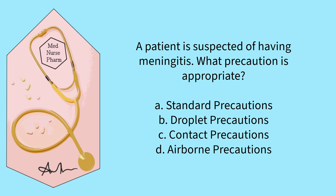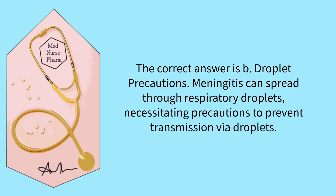A patient is suspected of having meningitis. What precaution is appropriate? Standard, droplet, contact, or airborne? The correct answer is B, droplet precautions. Meningitis can spread through respiratory droplets, necessitating precautions to prevent transmission via droplets.